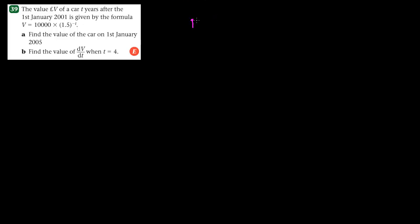This particular question is about exponential decay. Anything in the format of p equals to any constant e to the power minus kt is exponential decay. Here we have this format but instead of e, which is 2.718, we have another number 1.5.